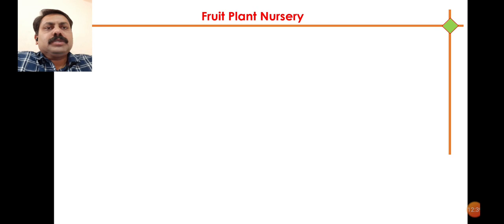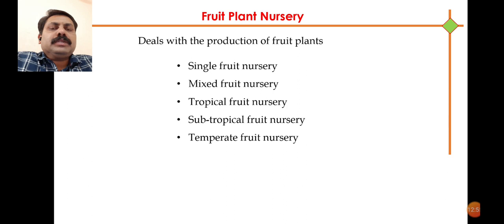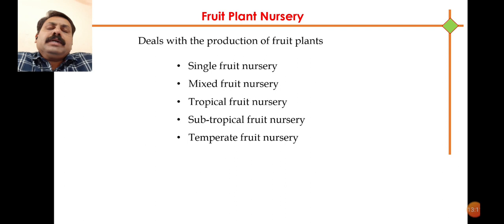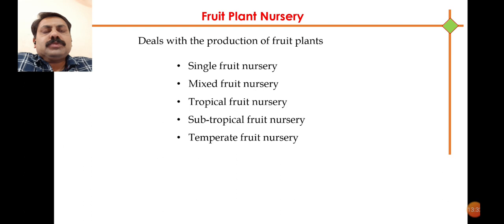The second type is fruit plant nursery, which deals with the production of saplings or seedlings of fruit plants. Fruit plant nursery may be of different kinds. As per the requirement and demand in a particular location, we can establish a single fruit nursery. For example, if we are residing in areas like Konkan, there is increased demand for Alphonso mango, so a single fruit nursery for Alphonso can be established there. In our areas, there is demand for pomegranate, so we can establish a pomegranate nursery.